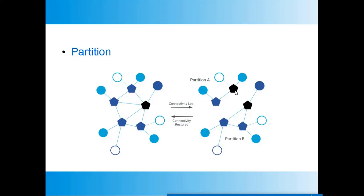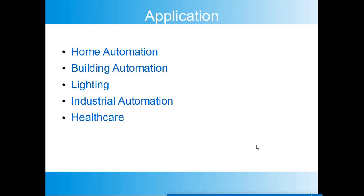Thread Protocol was started with a focus on home automation, but now it can be extended to building automation, lighting, industrial automation, healthcare, HVAC, and more. Thread Protocol is very robust, scalable, and flexible, and provides no single point of failure — giving it many advantages in the IoT space. Thread Protocol is going to play a very important role in the Matter protocol, forming one of its layers. In this video we have seen what Thread Protocol is, how it works, the device roles, and its applications.